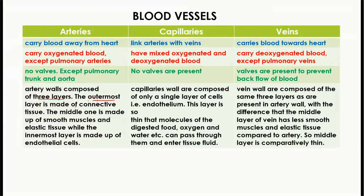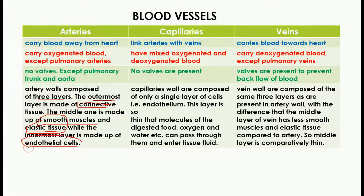Another difference is the composition of the layers. In arteries, three layers are present: the outermost layer is made up of connective tissue, the middle layer is made up of smooth muscles and elastic tissue, and the innermost layer is made up of endothelial tissue.